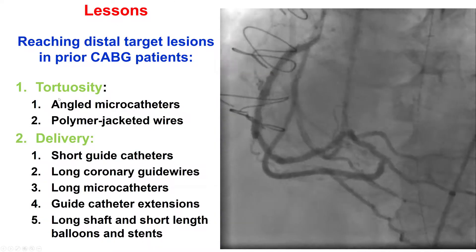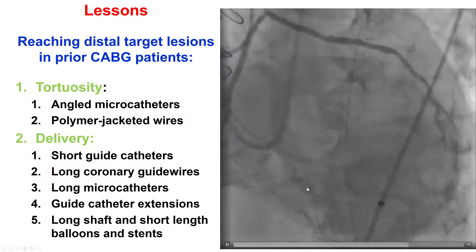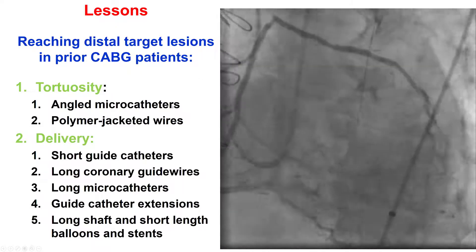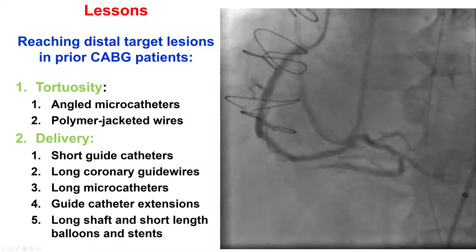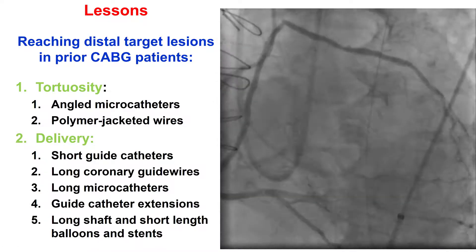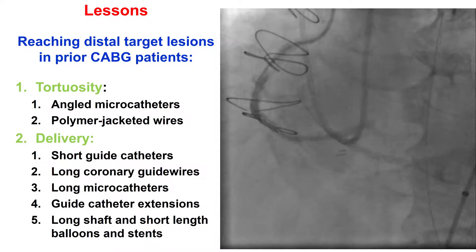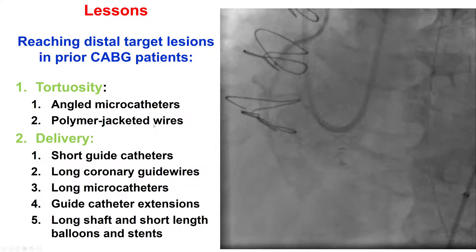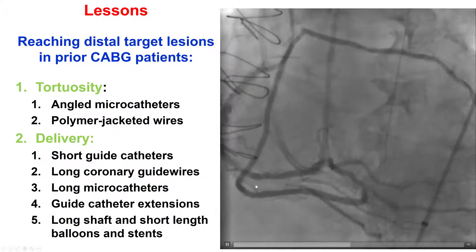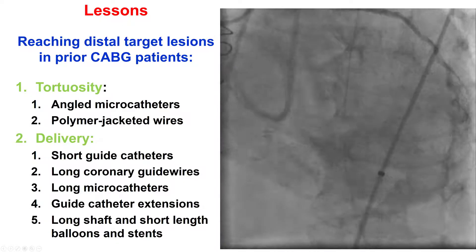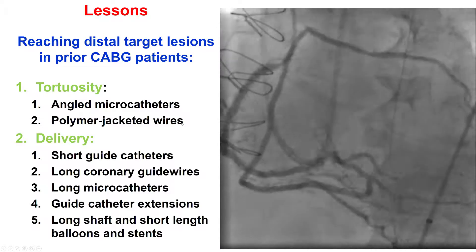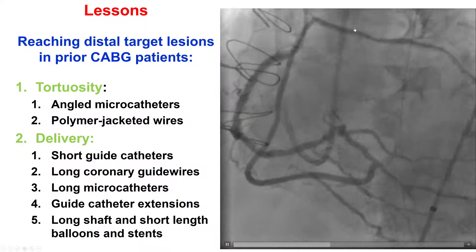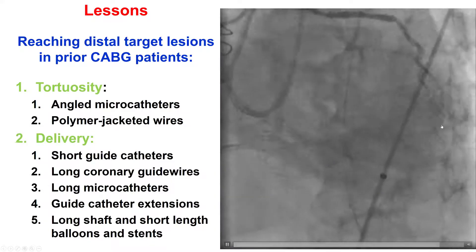One common challenge is tortuosity. We had several angles to overcome — going into the posterolateral, getting into the radial graft, all the way to the lesion. Using a microcatheter helps; sometimes an angled microcatheter such as the Supercross 120 or the Venture can help navigate through tortuosity. Polymer-jacketed wires such as the Fielder FC also help navigate those turns. After wiring, it's ideal to remove the polymer wire and use a workhorse guidewire, as polymer wires carry a slightly higher risk of distal vessel perforation.